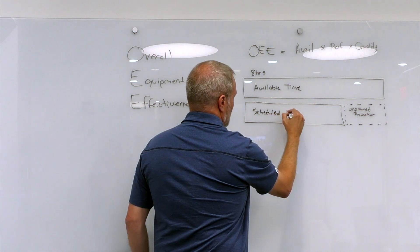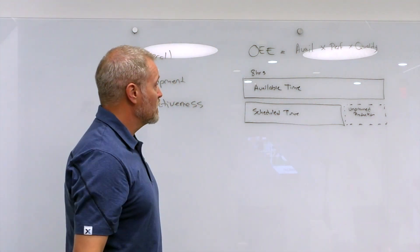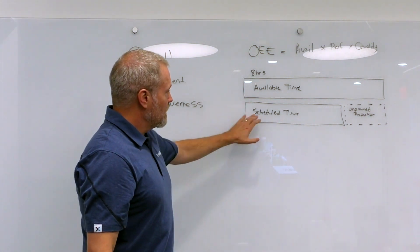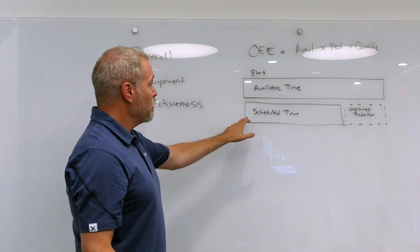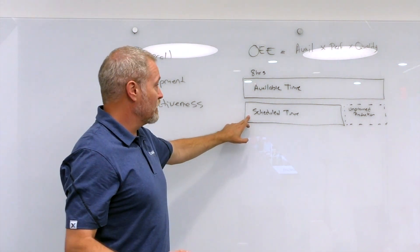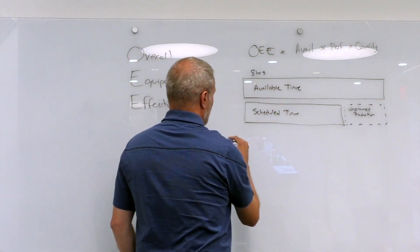This exact terminology can differ from system to system or implementation to implementation. The next thing we look at is, of the scheduled time, now I'm planning to run for this entire time. Now I'm looking for losses or inefficiencies in my process. The first one is availability.